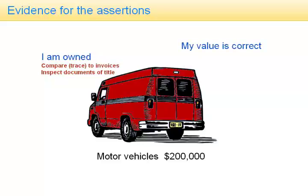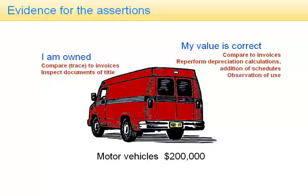How do we know that $200,000 is the correct value? We can compare to invoices. When a van is bought, any purchase tax would normally be split out because it may be recoverable from the government — we have to make sure that the correct amount is posted to the correct account. We could re-perform depreciation calculations. We can make sure the schedules of motor vehicles add up properly and are effectively supported by individual vehicles. We can observe vehicles being used — if they're not being used, perhaps they are obsolete or don't work, and perhaps their value should be written down much more quickly.